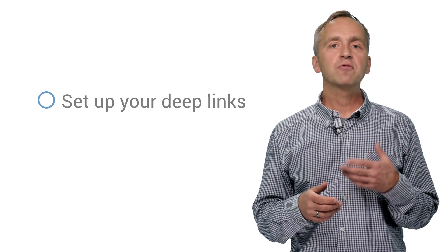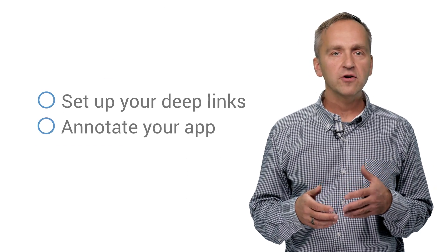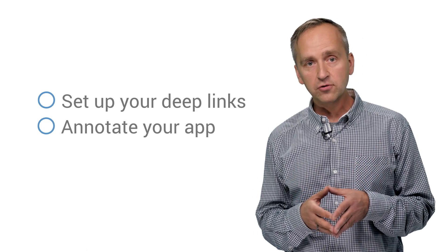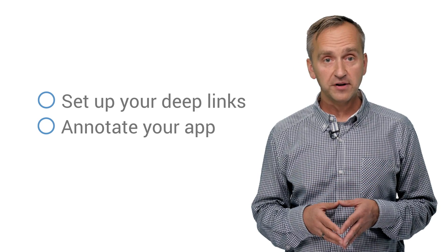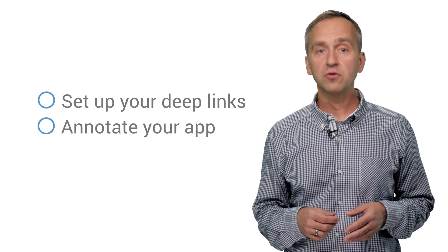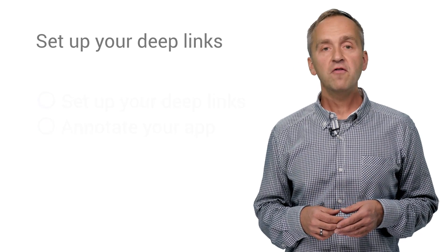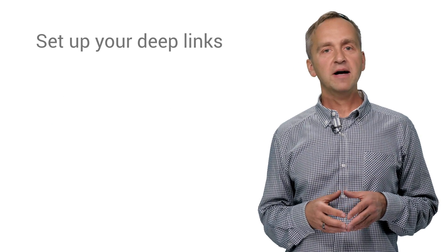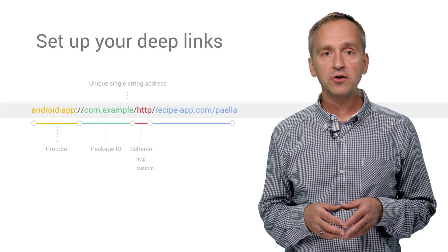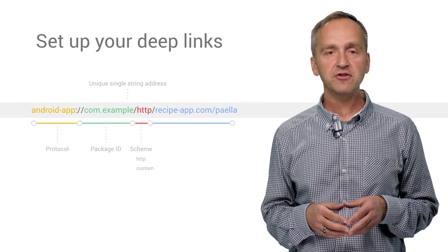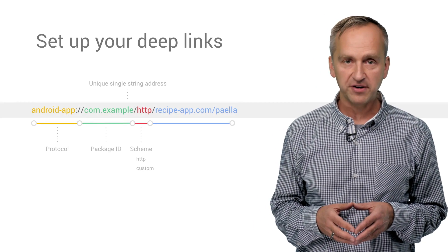Whether you're building an app for cooking, travel, or any other cool new use case, follow these two steps to integrate with Google search. First, set up your deep links so that the Google bot can crawl them, much like it crawls websites.